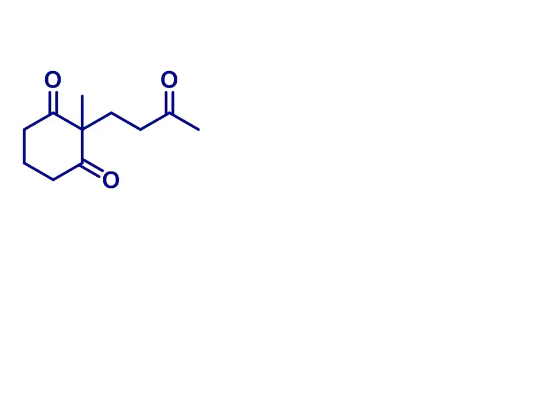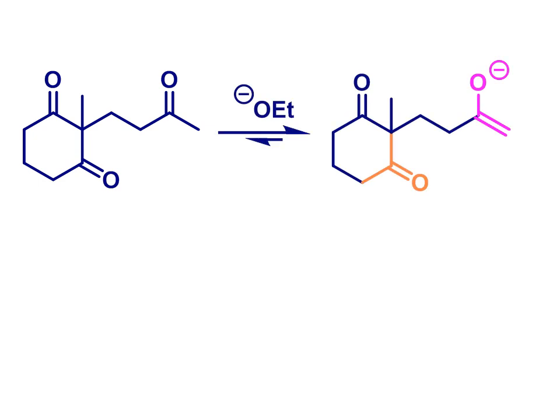Another way to make the reaction more selective is to do it intramolecularly, i.e. by having both the keto and enol reaction partners within the same molecule. This is a great way to make new rings. Look at this example and consider deprotonating alpha to the side-chain carbonyl group to give the enolate shown in pink.